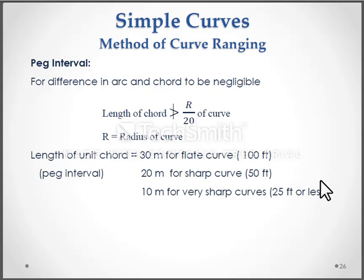For difference in arc and chord to be negligible, length of chord not greater than r by 20 of curve. The r means r is the radius of curve. Length of unit chord is equal to 30m for flat curve, 20m for sharp curve, 10m for very sharp curve.